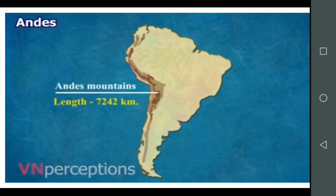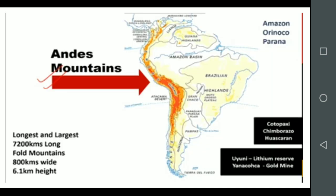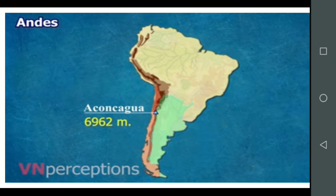The length of the Andes Mountains is somewhere around 7,242 kilometers. There are a number of lofty peaks in the Andes Mountains, the highest peak being Mount Aconcagua, which is around 6,962 meters.